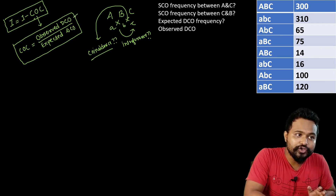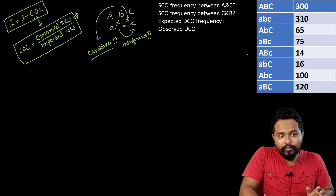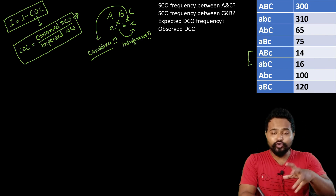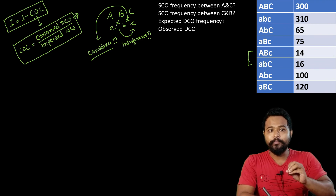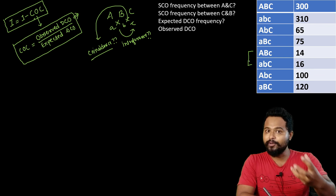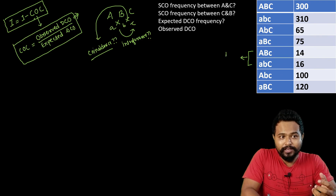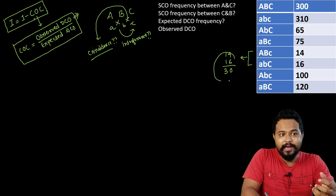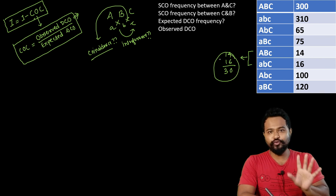The observed double crossover can be identified from the data — these are the classes with the fewest numbers. Adding those two double crossover classes: 14 plus 16 equals 30. So the observed double crossover value is 30, which is given directly from the question.